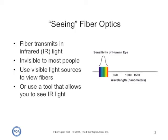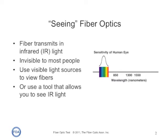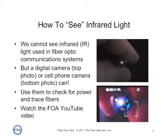So what we do is we use visible light sources to view fibers, or we use a unique tool that allows you to see infrared light. Although our eye is not sensitive to infrared light, digital cameras are. The top photo you see here was shot with a digital camera, and the bottom was actually shot with a digital camera in a cell phone. You can use them to check for power in the fiber, to make sure it's safe before you inspect the connector with a microscope, or you can use them to trace fibers. There's a complete YouTube video by the FOA that shows how to do this.